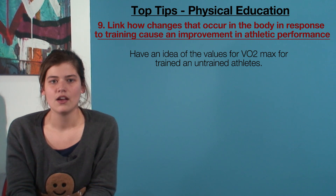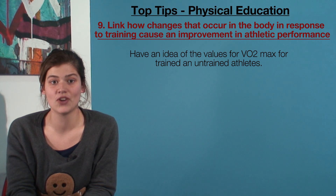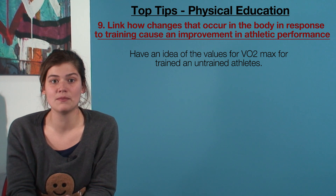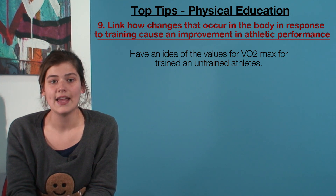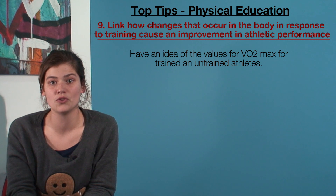Tip 9: for PE, it's really important that you are able to link changes that occur in the body in response to training. For example, an increase in oxygen uptake, VO2max, causes an improvement in athletic performance. It is also beneficial to have an idea of the values for VO2max for trained and untrained athletes.